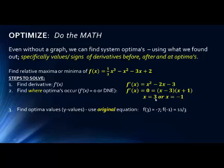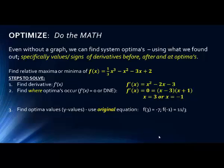Next, we find the optimal y values. The x values are where a max or minimum occurs; the y values tell us the actual optimal values. We plug these back into the original equation — not the derivative, which is a common mistake. Plugging x = 3 into the original equation gives y = −7. Plugging x = −1 into the original equation gives y = 11/3. So we have two points: (3, −7) and (−1, 11/3) that are optimal values.